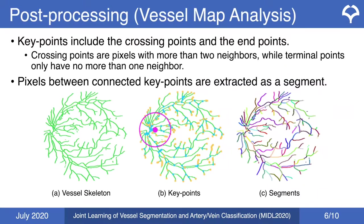The next step is post-processing to refine the classification results. First, we extract key points that include crossing points and endpoints. Crossing points are pixels with more than two neighbors, while terminal points — i.e., endpoints — have no more than one neighbor. After extracting key points, we extract segments, where a segment is a collection of all the pixels between connected key points.